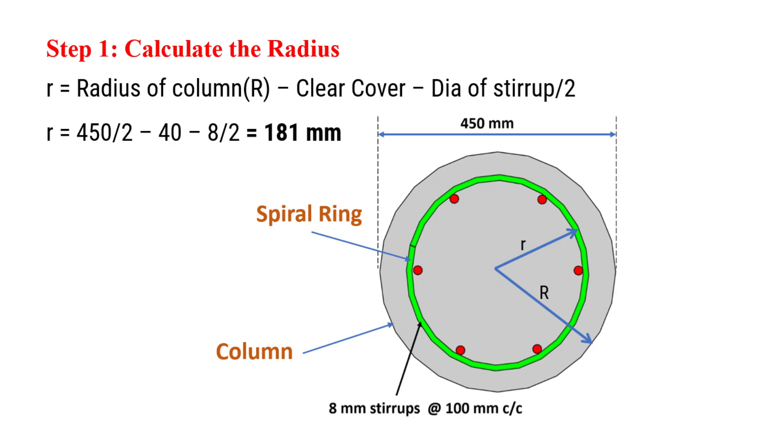Radius of column will be diameter of column divided by 2. That's 450 mm divided by 2. Clear cover is 40 mm and diameter of stirrups is 8 mm. On substituting these values, the radius of spiral stirrup will be 181 mm.